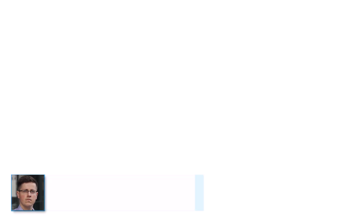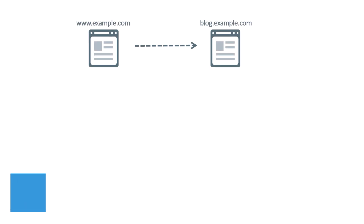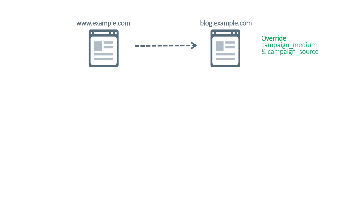I have done various experiments and the one setup that is the most reliable is this one. Here's the plan: if the visitor goes from one subdomain to another subdomain, then on that second subdomain, we will overwrite the campaign medium and campaign source parameters. The value of the campaign source will be the hostname of the previous subdomain, and campaign medium will be referral.